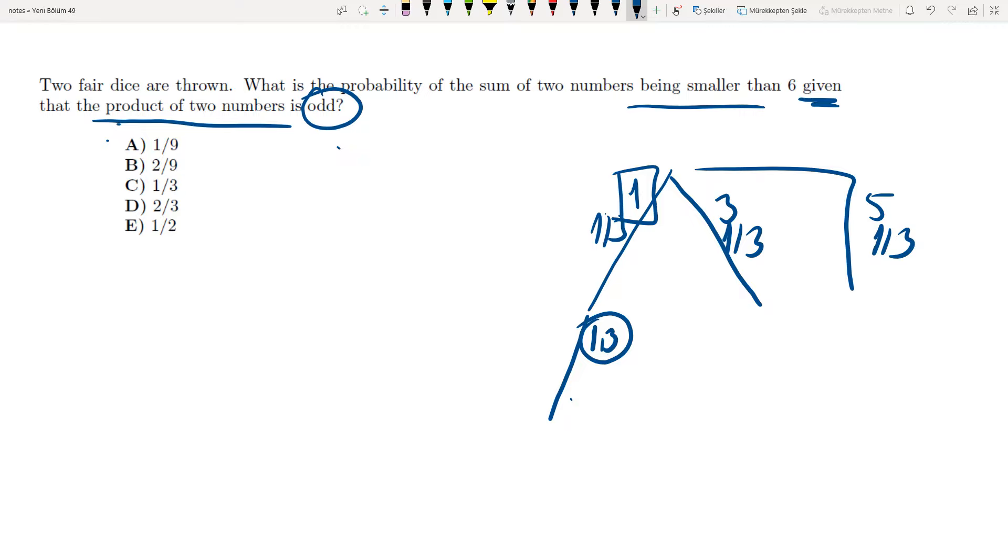Therefore, two out of three. Why three? Because I can only have one, three, or five on the second die, since I know that both outcomes are odd.